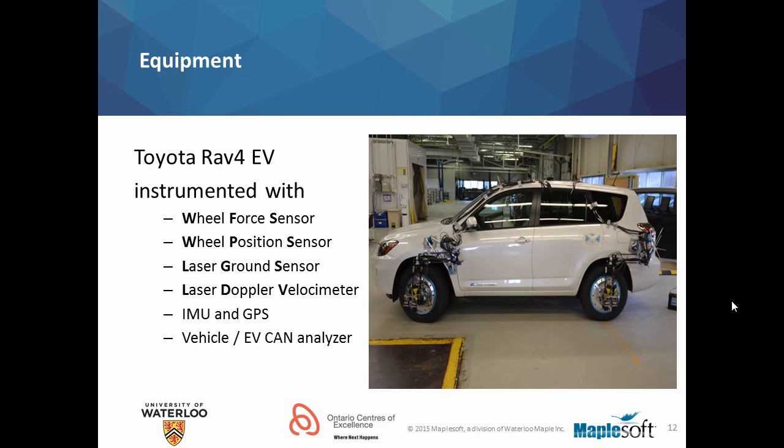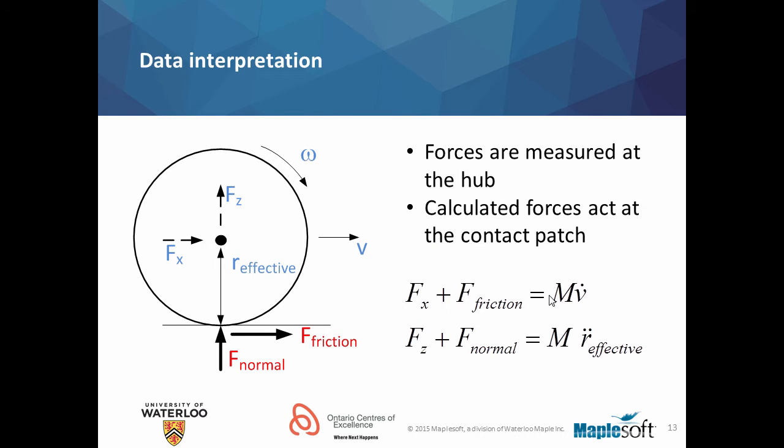For the VMS system, or the vehicle measurement system, we have used a Toyota RAV4 electric vehicle which was instrumented with wheel force sensor, wheel position sensors, laser ground sensors, laser Doppler velocimeter, IMU and GPS to track the orientation of the body, and DVCAN analyzer software to capture and analyze the data.